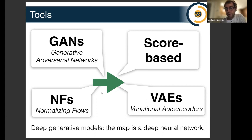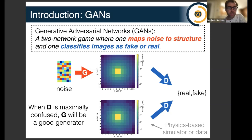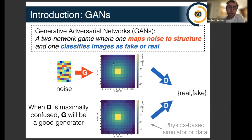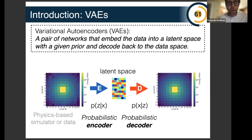A GAN is constructed by training two neural networks: one that maps noise to structure, and a second that distinguishes generated examples from real examples. They compete — when the discriminator is confused, the generator is doing a very good job, and you keep the generator. Variational autoencoders are a variation of the autoencoder: you have a probabilistic compression model and a probabilistic decompression model, and once trained you can use the decoder as a generative model.